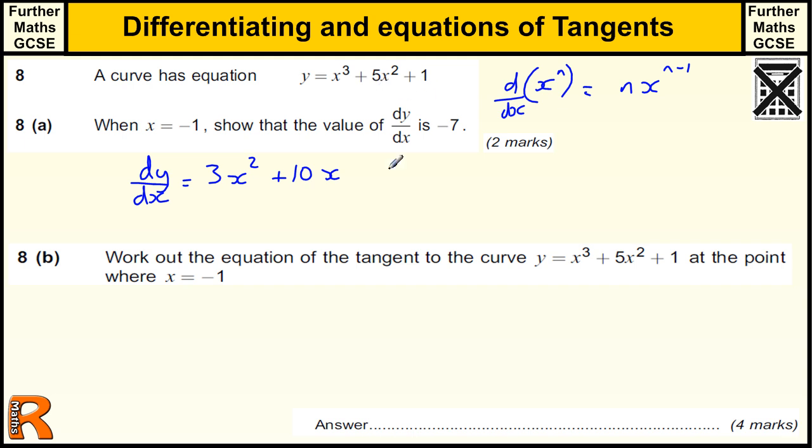This implies when x equals minus 1, dy by dx equals 3 lots of minus 1 squared plus 10 times minus 1. Minus 1 squared is 1 times 3 is 3. 10 lots of minus 1 is minus 10. So we end up with 3 minus 10, which is minus 7. So we have showed that it's minus 7.